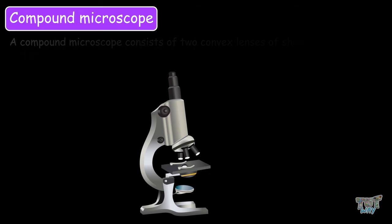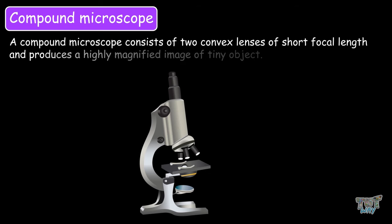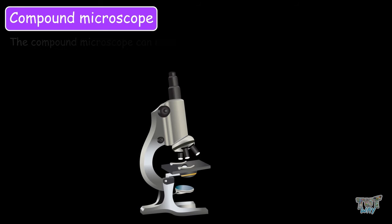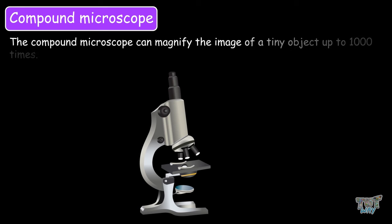A compound microscope consists of two convex lenses of short focal lengths and produces a highly magnified image of a tiny object. The compound microscope can magnify an image of a tiny object up to 1000 times.